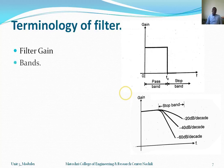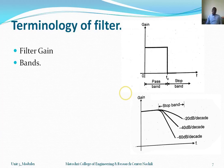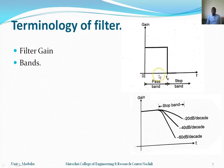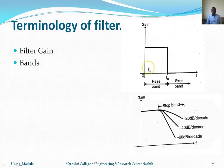The next terminology is bands. There are two types of bands: pass band and stop band. Pass band is the particular range of frequency that is passed, and stop band is the particular range of frequency that is stopped. As shown in the diagram, from zero to fc the frequency range is called the pass band, and from fc onward is the stop band, where the output of the filter is zero.